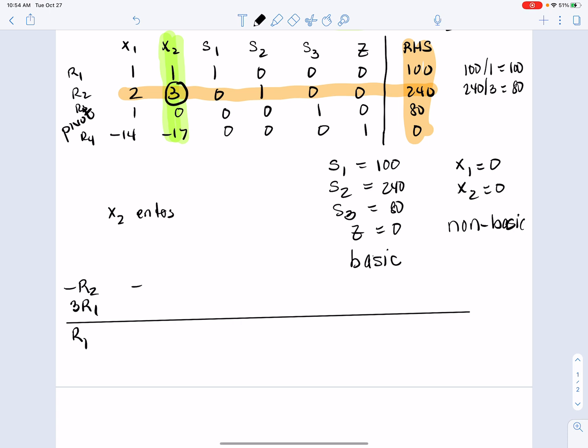So it's writing those numbers down. So negative r2 would be negative 2, negative 3, 0, negative 1, 0, 0. And just so I have that point of reference, the negative 240. 3r1 is going to be 3, 3, 3, 0, 0, 0, 300.